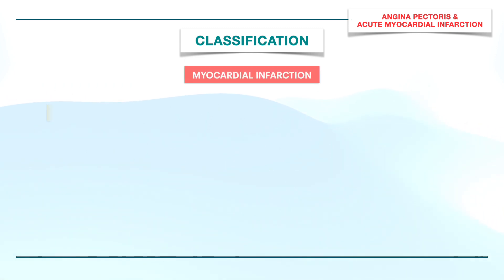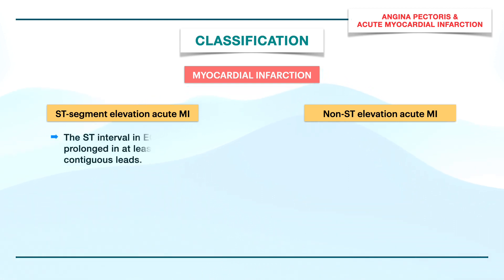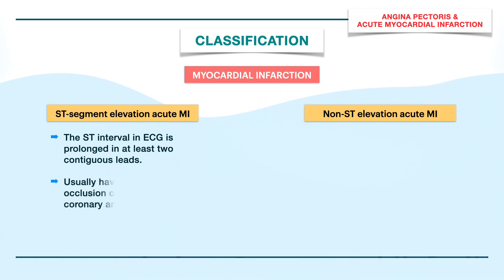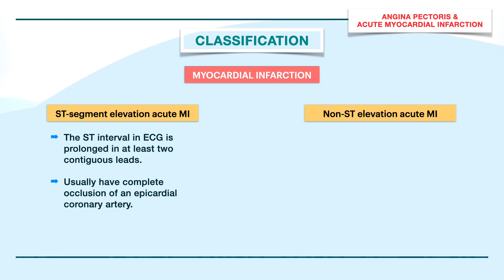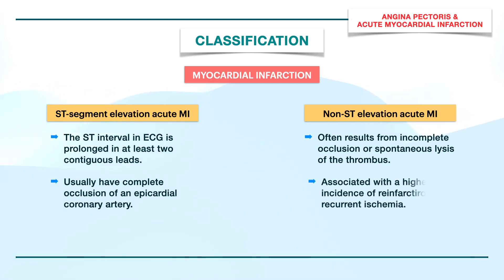Myocardial infarction can be grouped as ST segment elevation or non-ST segment elevation acute MI. In ST segment elevation, the ST interval on ECG is prolonged in at least two contiguous leads, and there is usually complete occlusion of an epicardial coronary artery. Non-ST elevation often results from incomplete occlusion or spontaneous lysis of the thrombus and is associated with a higher incidence of reinfarction and recurrent ischemia.